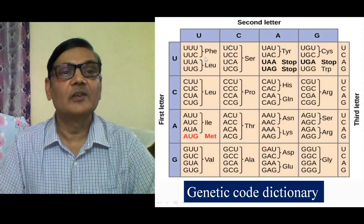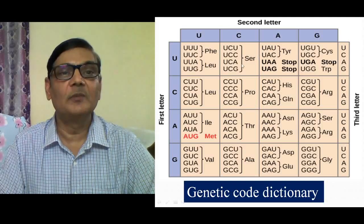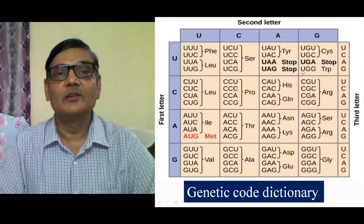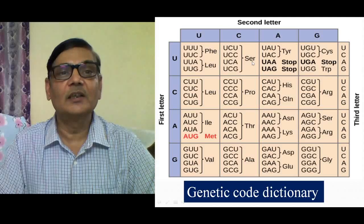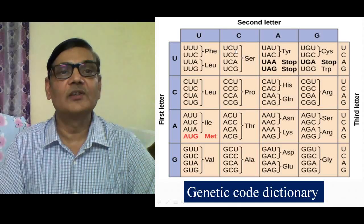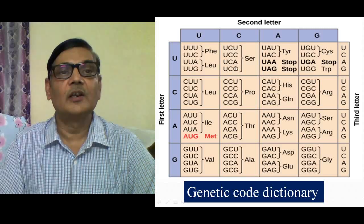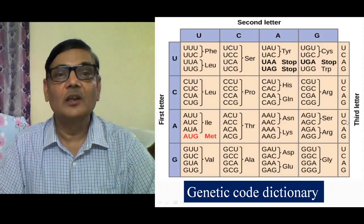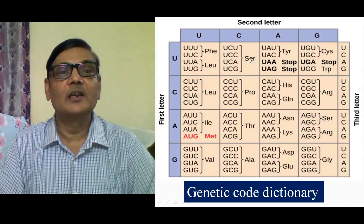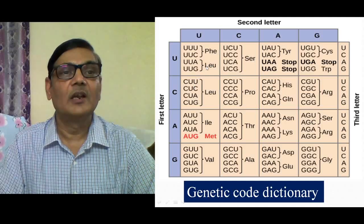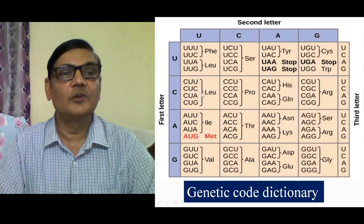We also observe that certain codons encode a single amino acid. Methionine is one of them, and likewise UGG is a single codon that encodes for tryptophan. In other cases, a single amino acid may be recognized by more than one codon. For example, there are four codons here that recognize serine, and also two more codons — AGU and AGC — for serine, making six codons total that recognize serine. Similarly, leucine is identified by six codons — two here and four elsewhere.